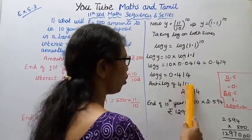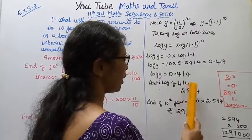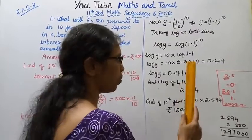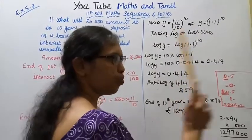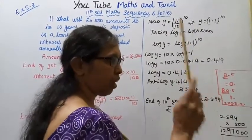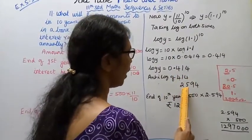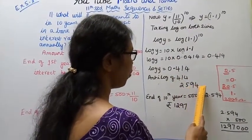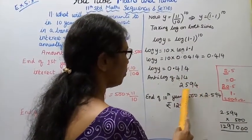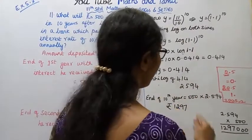Now taking antilog: antilog of 0.414. Looking up the antilog table for 0.414, we get the value 2594. So y equals 2.594. Therefore, the total amount after 10 years is 500 into 2.594, which gives approximately rupees 1297.